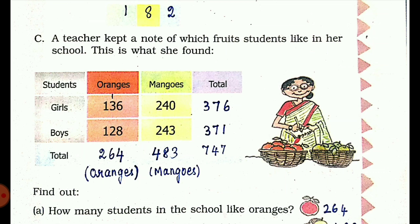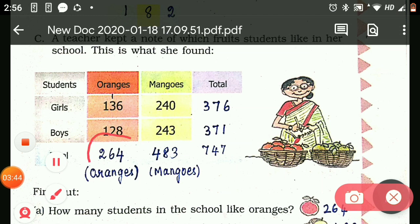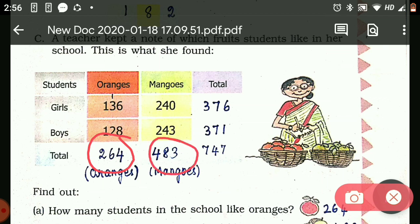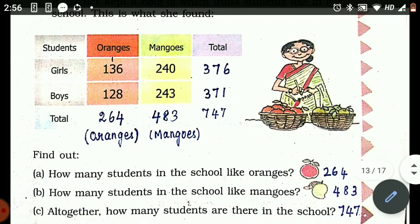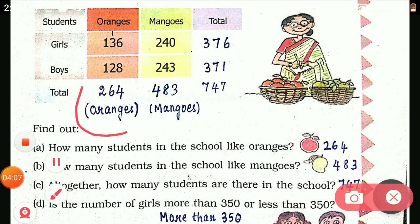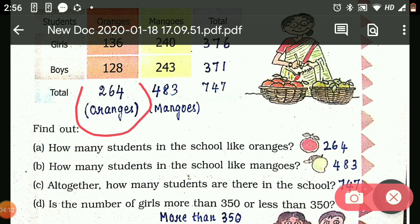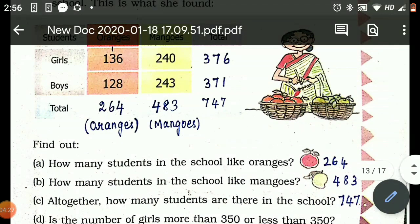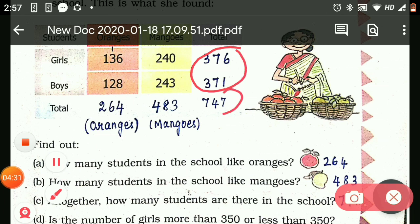See here, this total is on the whole who liked oranges. This is on the whole who liked mangoes. This total is total number of students. How many students in the school like oranges? 264 students liked oranges. How many students in the school like mangoes? 483. Altogether how many school students are there? You have to add 264 plus 483 to get 747. Is the number of girls more than 350 or less than 350? Total number of girls is 376, so it is more than 350.